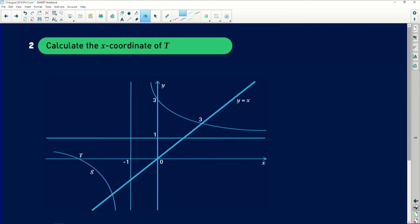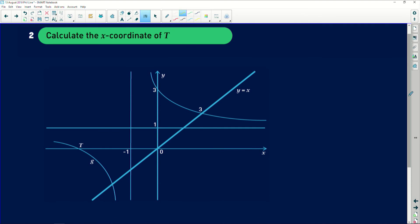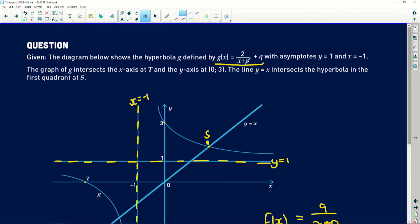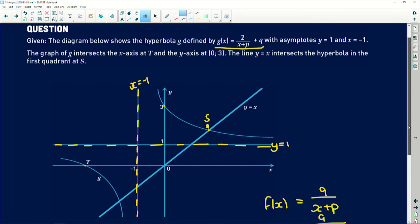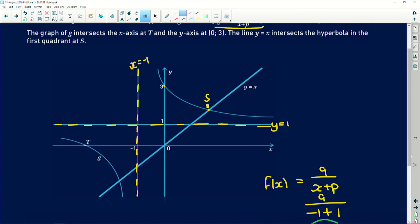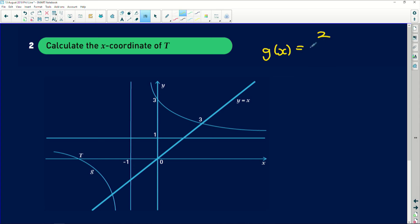Secondly, it says calculate the x-coordinate of t. Now we found that g of x equals 2 over x plus 1 plus 1. The x-coordinate of t, remember t is an x-intercept, so y equals 0. We simply need to make our graph equal to 0.